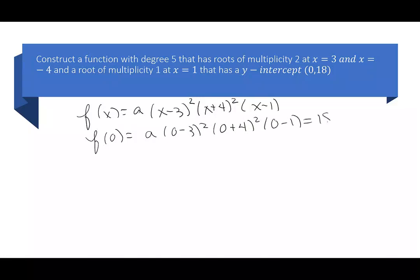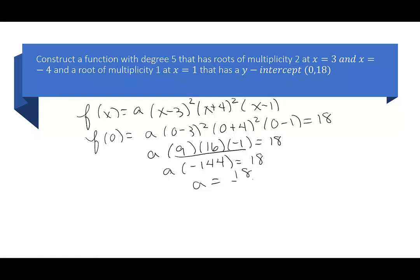This looks like a times 9 times 16 times negative 1 is 18. The 9 times 16 times negative 1 gives me negative 144. So to get a, I take 18 over negative 144, which reduces down to negative 1 over 8.